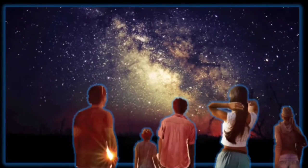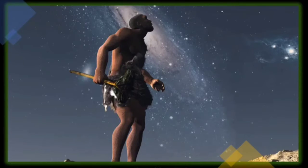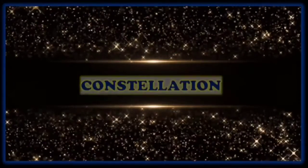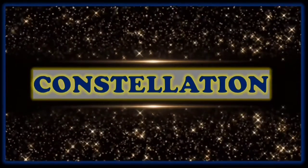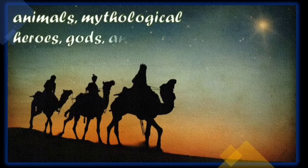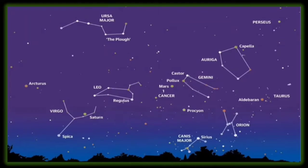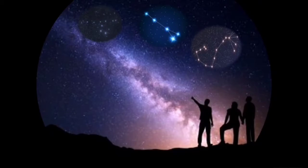People are always fascinated by the night sky and the stars. People in ancient times noticed how stars appeared to form patterns in the sky. These star patterns are known as constellations. The ancient people first observed these groups of stars as outlines of animals, mythological heroes, gods, and other objects. They found it easier to locate and remember constellations when they tried to find a distinct and particular pattern of how a group of stars are arranged.